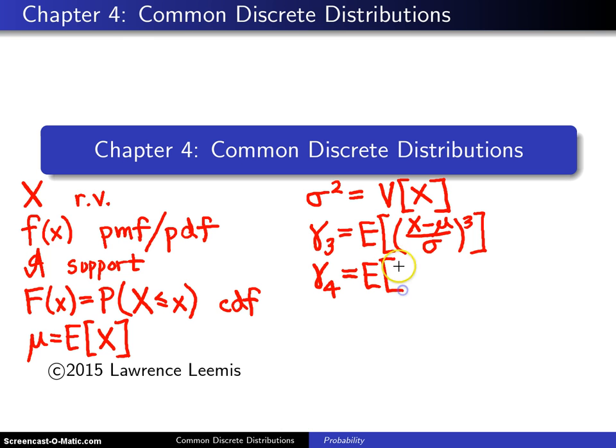The fourth moment of the standardized random variable is known as the kurtosis, and it is a measure of tail behavior or the peakedness of a distribution. You have seen four moments here. More generally, you can take the expected value of any function of the random variable capital X, and you are not just limited to these different possibilities.